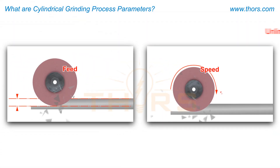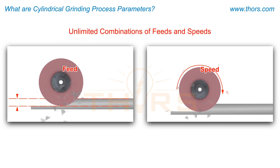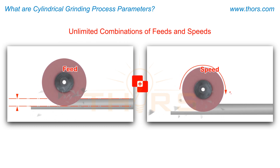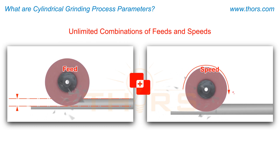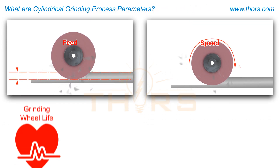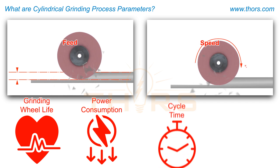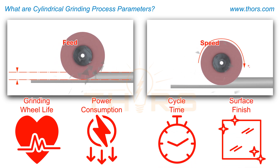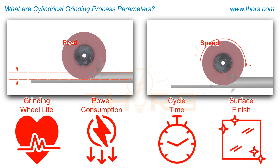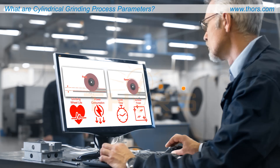Modern machines provide unlimited combinations of feeds and speeds. For a successful grinding operation, pairing the correct parameters with the available tooling is necessary. Feeds affect the grinding wheel life and power consumption, and speeds affect the cycle time and surface finish of the finished part. This necessitates tightly controlling the grinding parameters to manufacture parts with a consistent quality, in a cost-effective, and time-efficient manner.